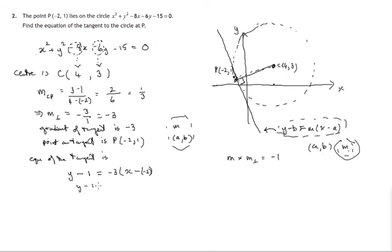So that'll be y minus 1 equals negative 3x plus 2. Take away negative 2 plus 2. Let's get rid of brackets. Negative 3x and negative 3 times 2 is negative 6. And let's tidy up by adding 1 to both sides. 1 onto the negative 6 is negative 5.